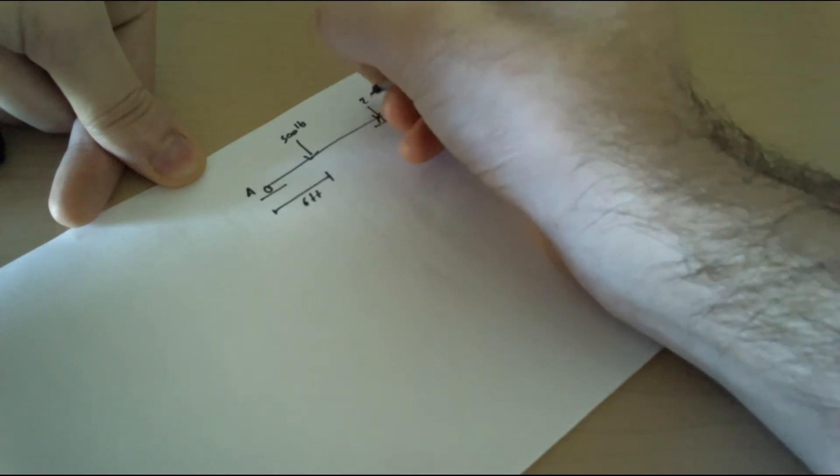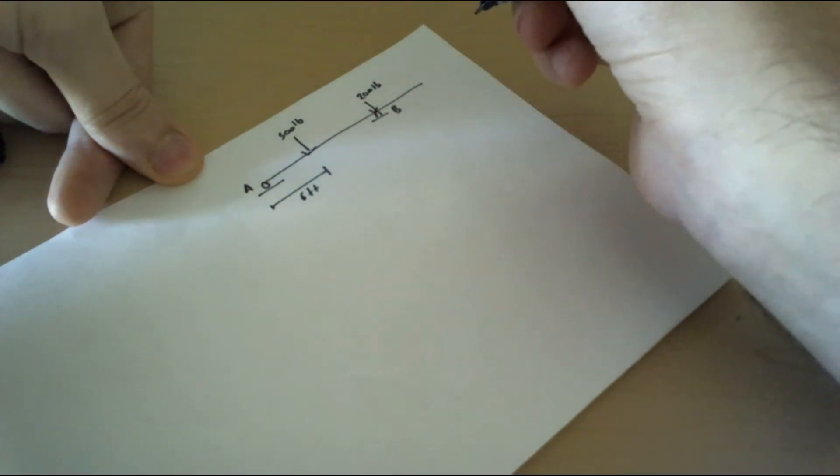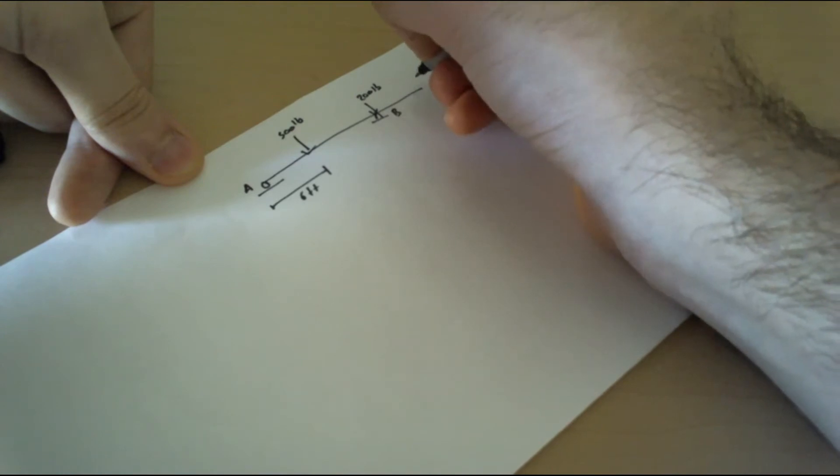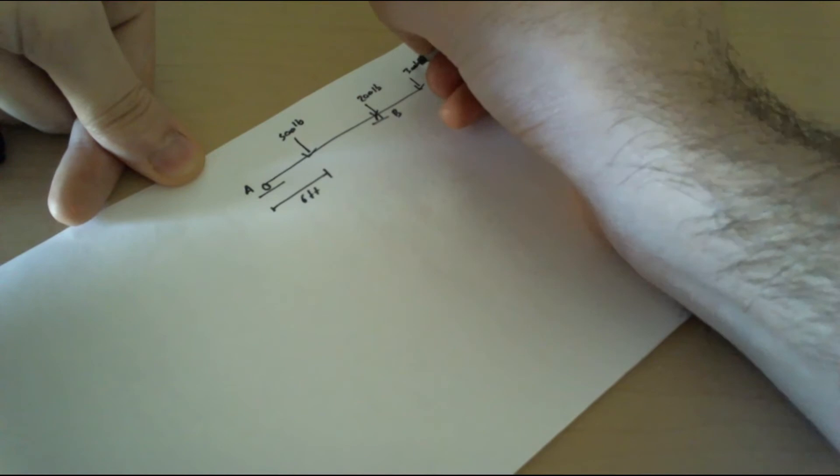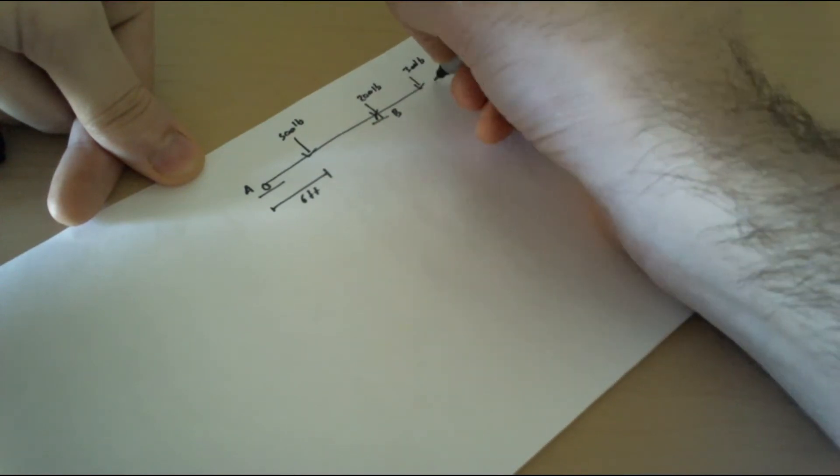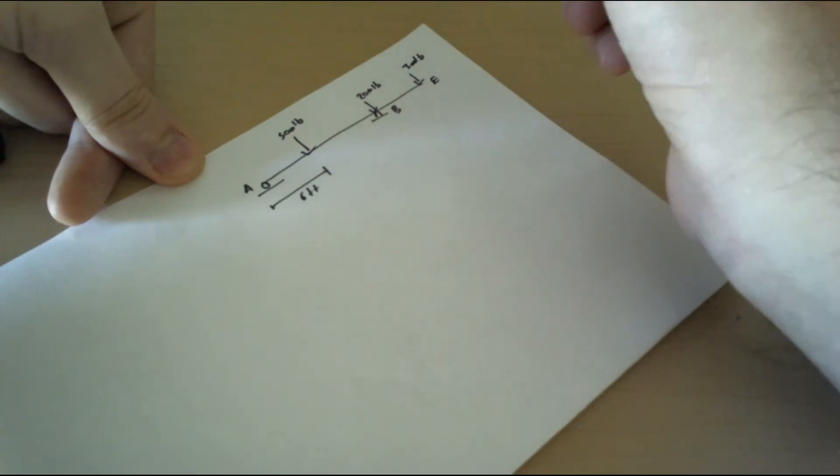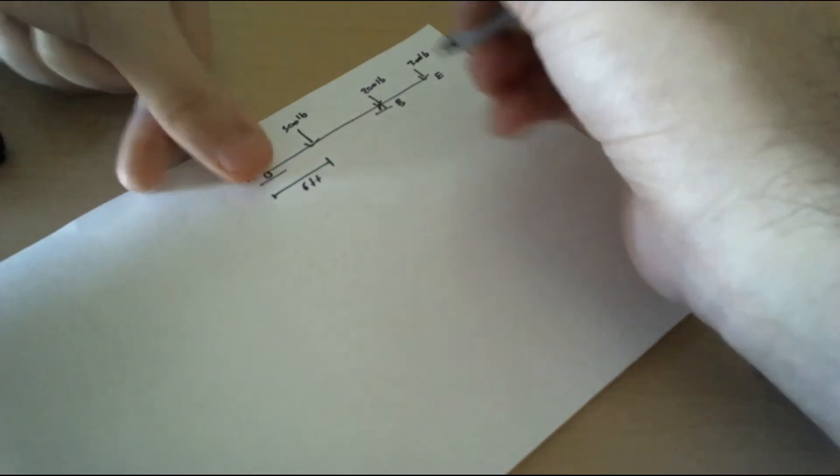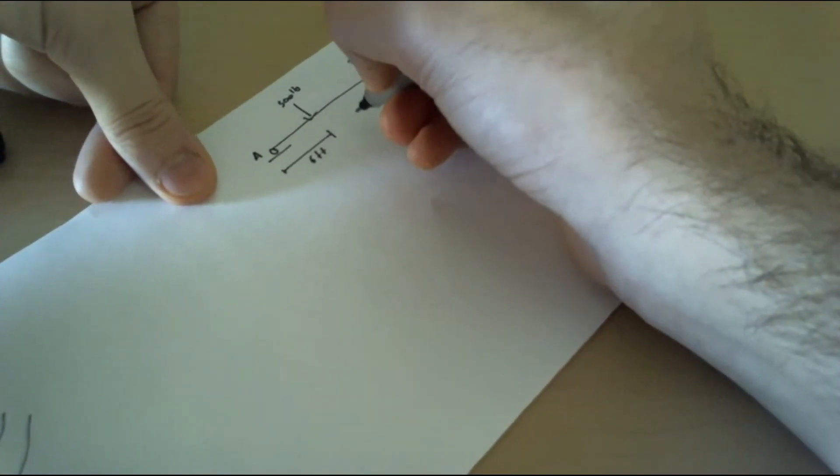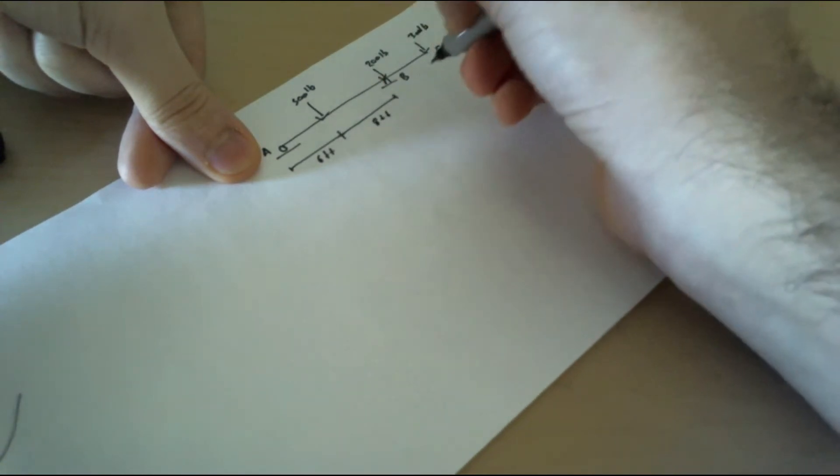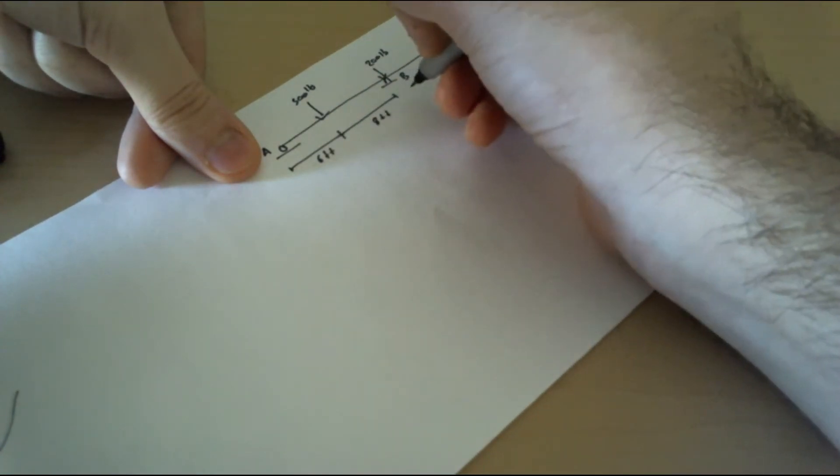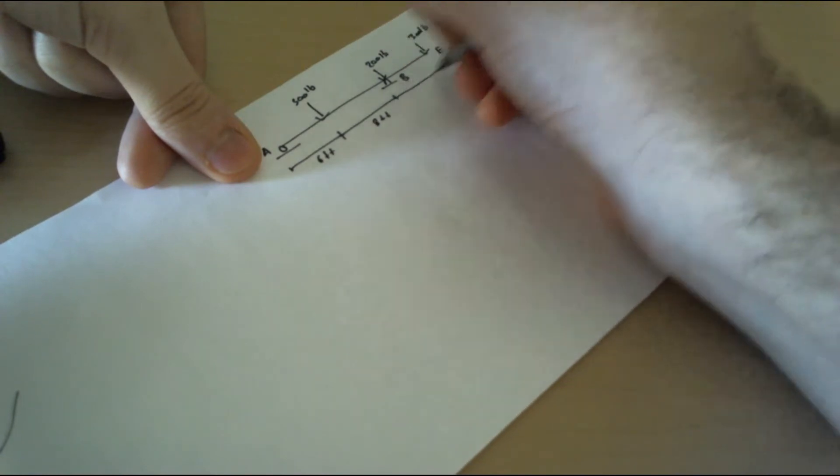There's 200 pound, and at the free end we have a 300 pound, which we call E. The distance from here to here is six feet as I said. From here to here is eight feet, and from here to here is eight feet.